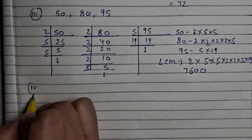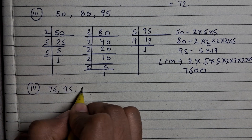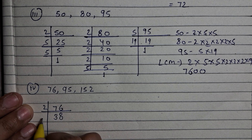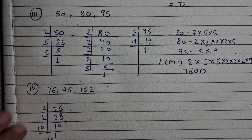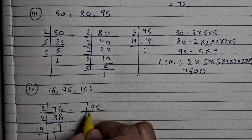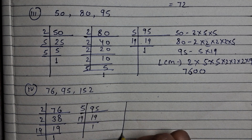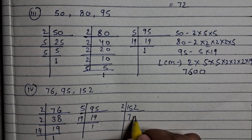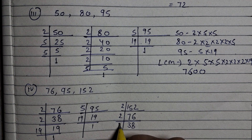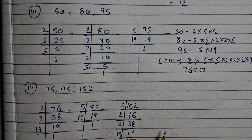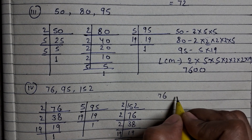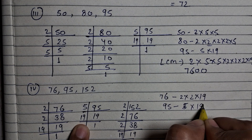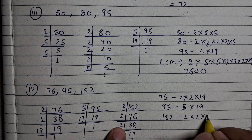Question number 4: we have 76, 95, and 152. For 76: 2 × 38, 2 × 19. So 76 = 2 × 2 × 19. For 95: 5 × 19. So 95 = 5 × 19. For 152: 2 × 76, 2 × 38, 2 × 19. So 152 = 2 × 2 × 2 × 19.